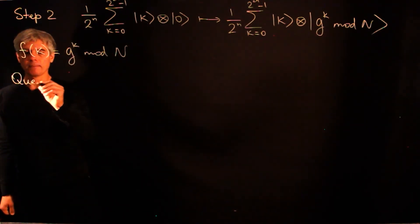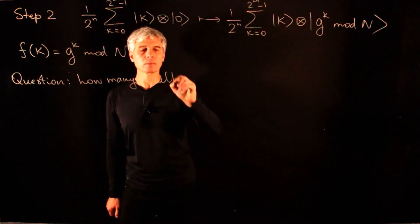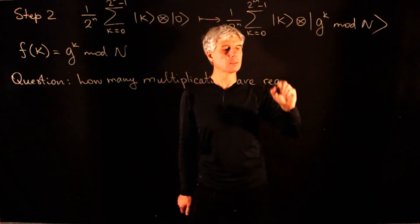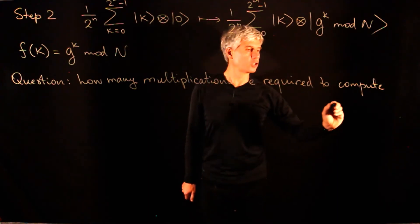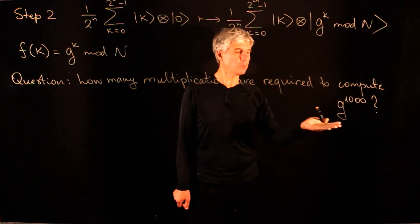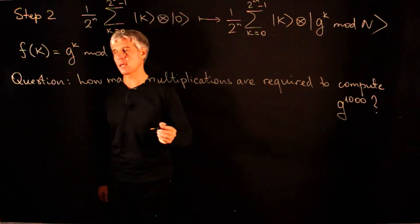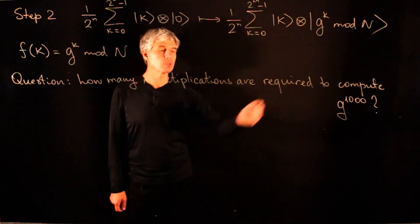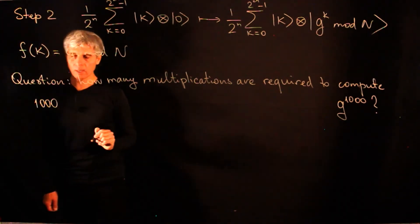How many multiplications are required to compute G^1000? The naive answer is 999 multiplications: compute G², G³, G⁴, and so on. The clever answer involves the binary expansion of 1000. So 1000 in binary is 512 + 256 + 128 + 64 + 32 + 8.